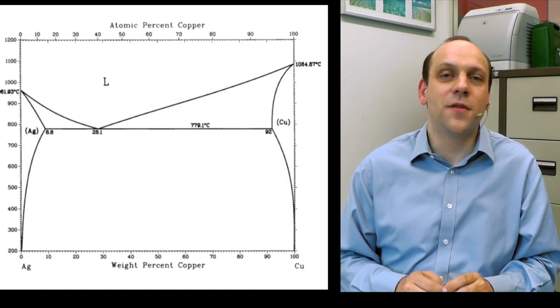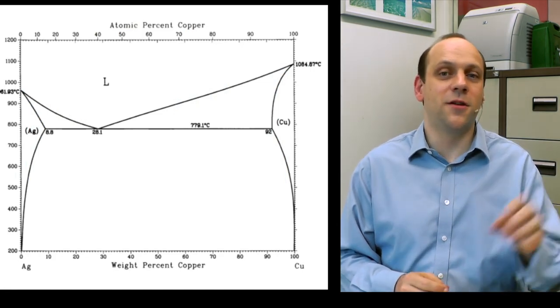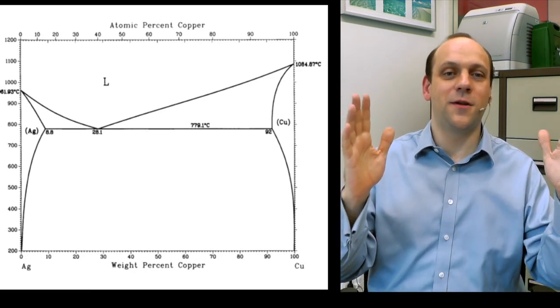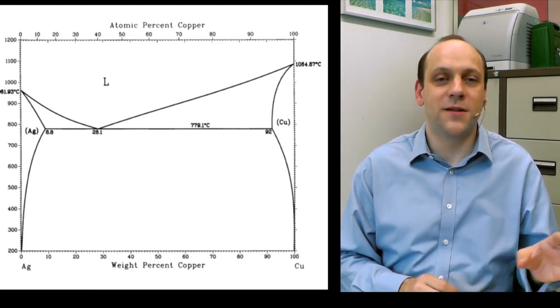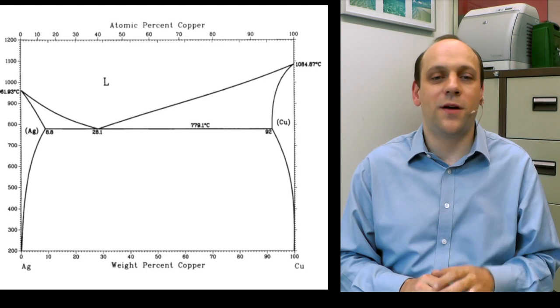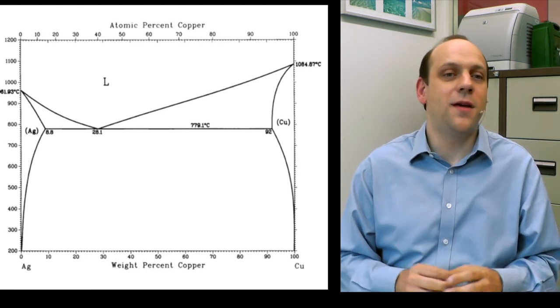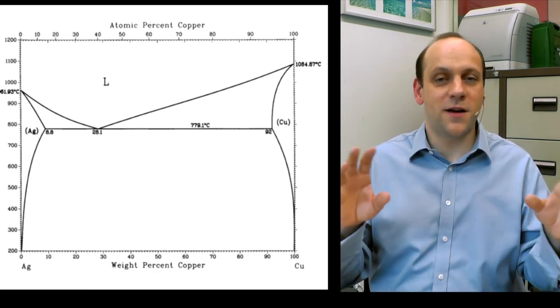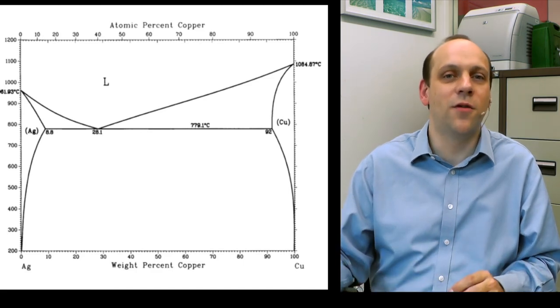Here's another example. This is the silver-copper phase diagram. Again, we've got silver with some solubility for copper, copper with some solubility for silver, liquid with complete solubility, and we have three two-phase regions. Liquid plus silver, liquid plus copper, and silver plus copper. And that's what the copper-silver phase diagram looks like. So these phase diagrams, just with these three phases in, are moderately common. There are some of them around.